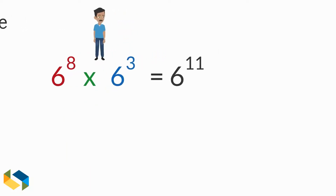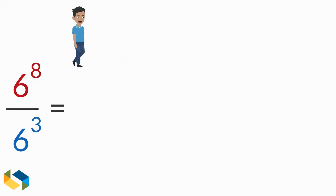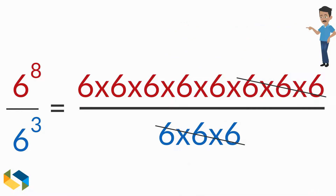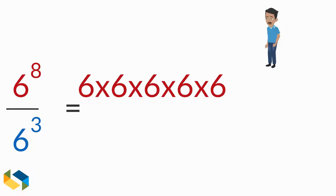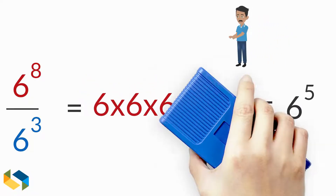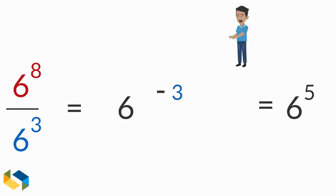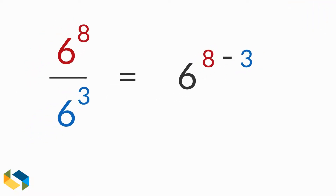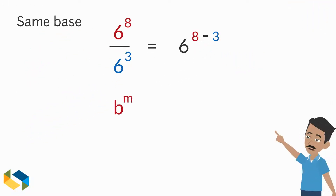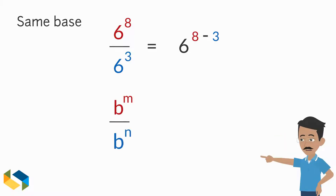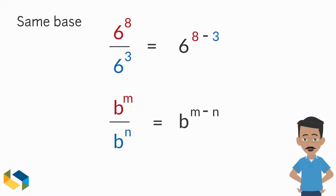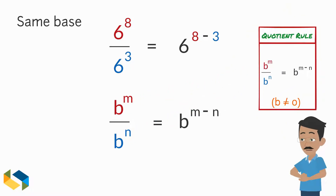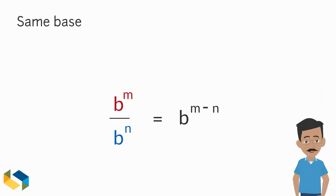Let us observe what happens if we divide these two expressions. Writing this in the form of repeated multiplication and solving gives us six multiplied by itself five times. This is the same as subtracting the exponent of the denominator from the exponent of the numerator. Hence we get a new rule: B raised to the power M divided by B raised to the power N equals B raised to the power M minus N. This is called the quotient rule.